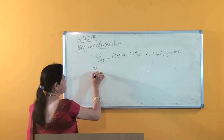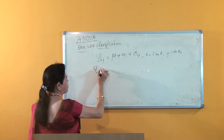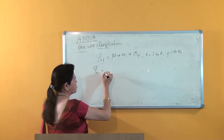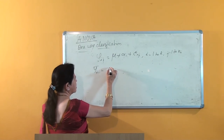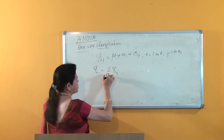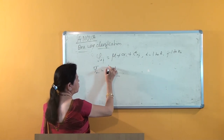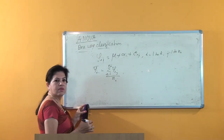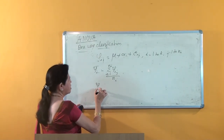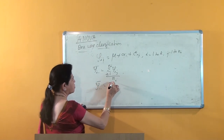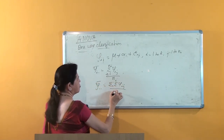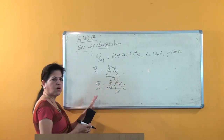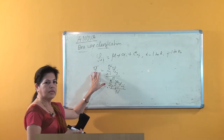Now let us define the means. The class mean y_i-dot-bar, the mean of the i-th class, is equal to summation of y_ij over j = 1 to n_i, divided by n_i. The overall mean y-double-dot-bar is equal to the double summation of y_ij over i = 1 to k and j = 1 to n_i, divided by n.